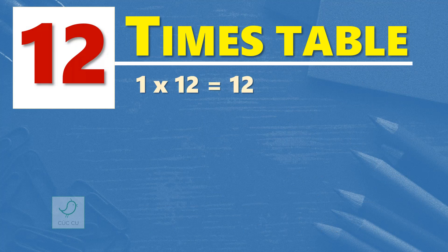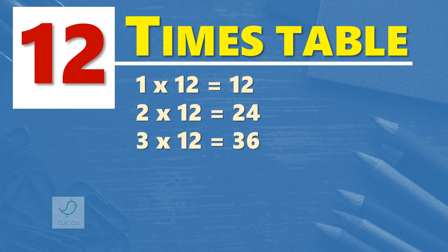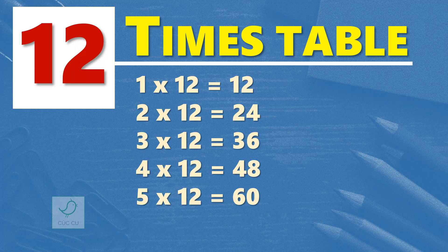12 times 12 are 144. 3 x 12 or 36, 4 x 12 or 48, 5 x 12 or 60.